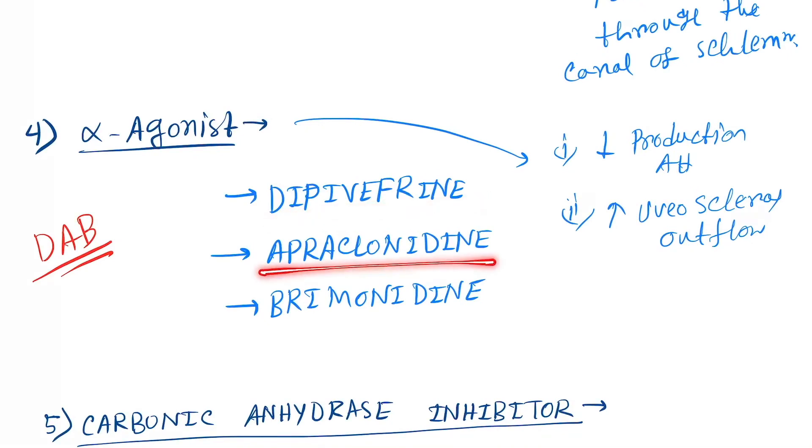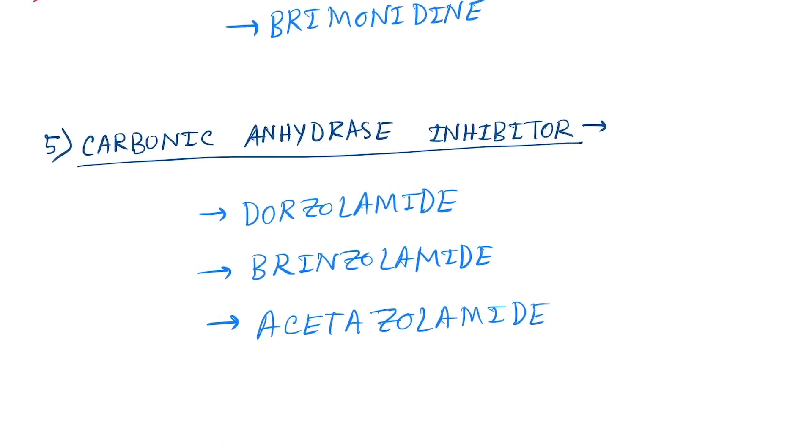A for apraclonidine, B for brimonidine. Next is carbonic anhydrase inhibitor. As the name implies, it will limit the secretion of the aqueous humor.